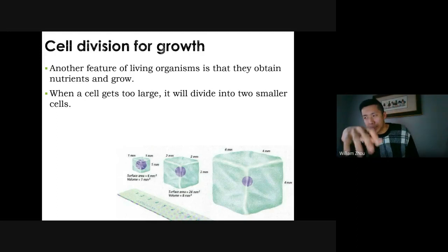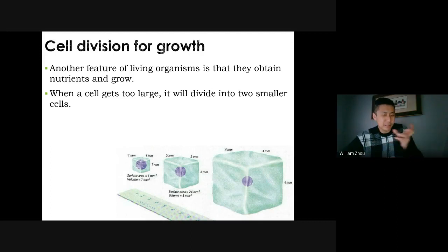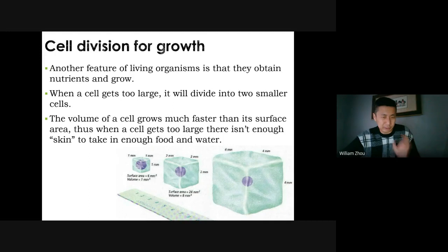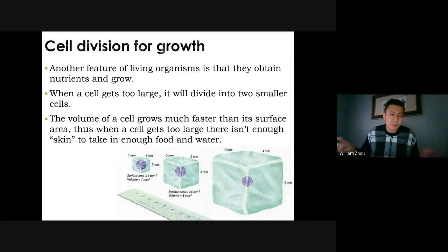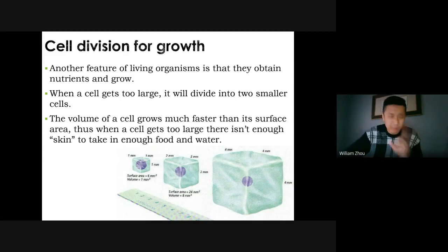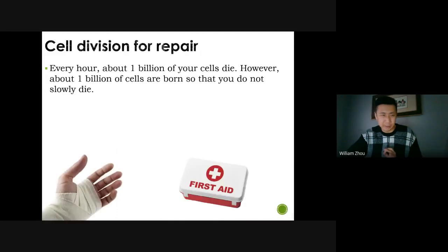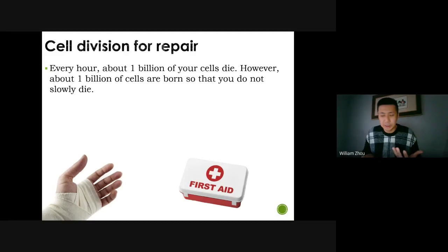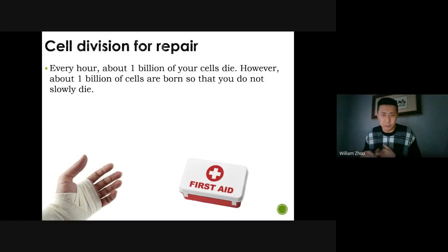When a cell gets too large, it has to divide — otherwise it can't get enough nutrients. Volume grows faster than surface area, so by dividing, you reduce your volume and increase surface area, making you more efficient. Cells also divide to repair: about every hour, a billion of your cells die.